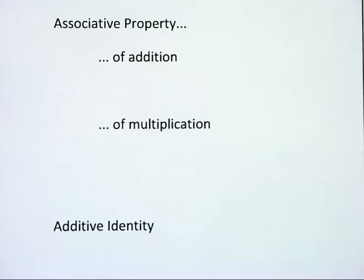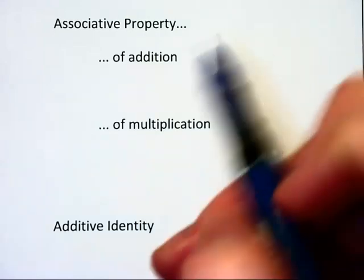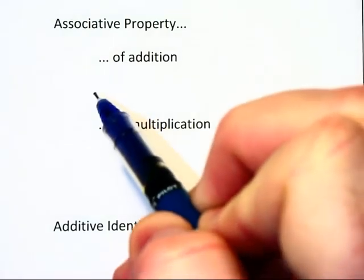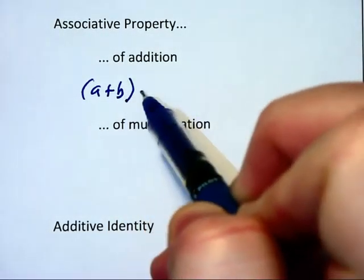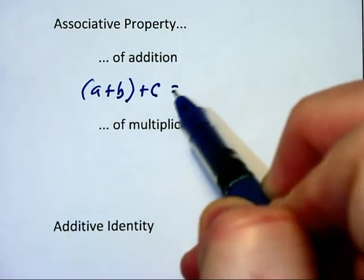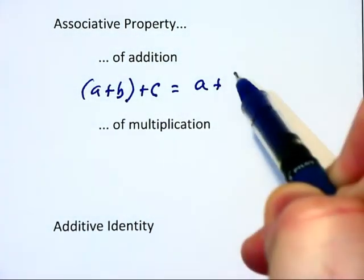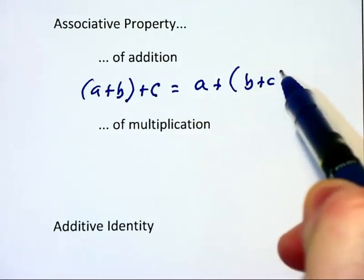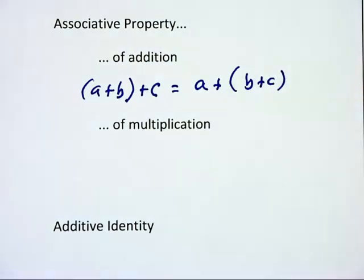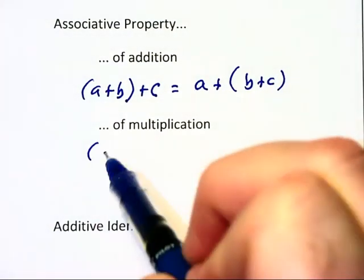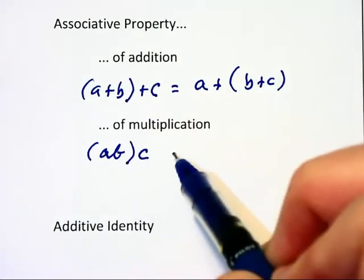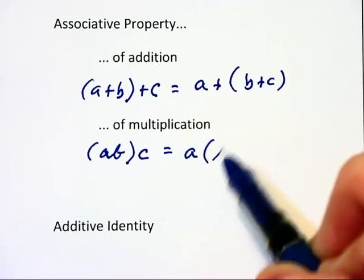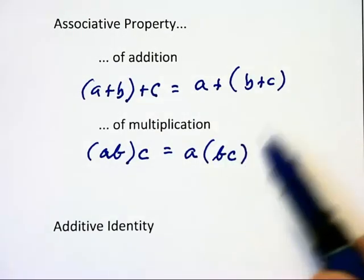Let's look at the associative property of addition and multiplication. Here we have three numbers. The associative property of addition says (a + b) + c = a + (b + c). Likewise, the associative property of multiplication says (ab)c = a(bc).